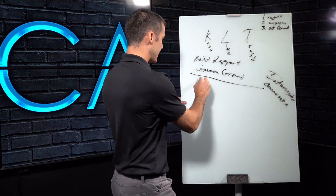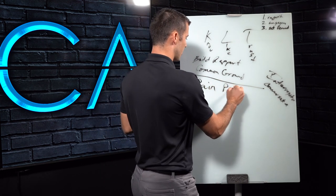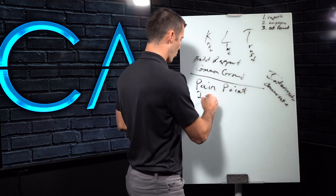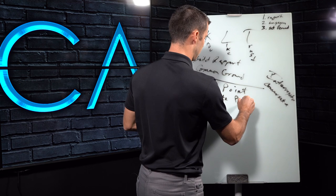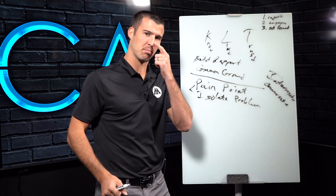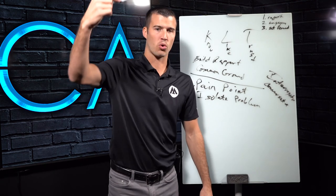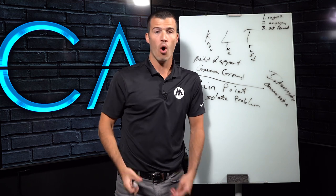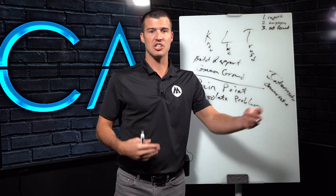So the first piece was know, like, and trust. The second piece is finding the pain point, or isolating the problem. Why do they need your help? Why will they be doing business with you today? What keeps them up at night?